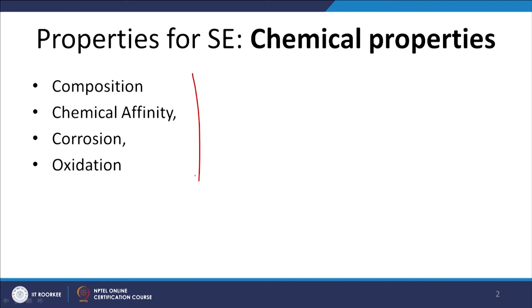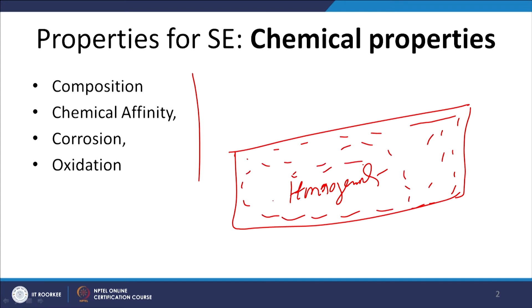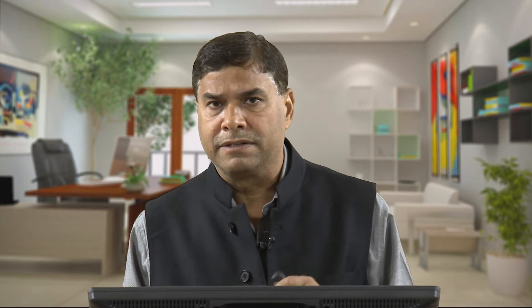Not just the chemical composition, but the homogeneity of the chemical composition is also important. It is required that whatever alloying elements are present in a given metal are distributed uniformly everywhere, so there is no segregation. If there is segregation, it will lead to the formation of easy galvanic cells and will adversely affect the corrosion resistance. Homogeneity of chemical composition, leading to the absence of segregation or localised presence of some elements, will further improve the corrosion resistance or resistance to oxidation.